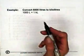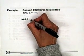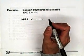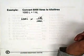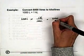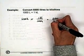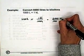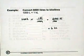One more example here: 6,000 liters to kiloliters. 6,000 liters times the unit conversion — 1,000 liters equals 1 kiloliter. Let's cancel the units there. 6,000 divided by 1,000 kiloliters, or 6 kiloliters. You can do this just by canceling the zeros.